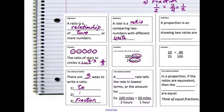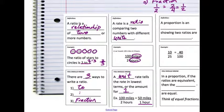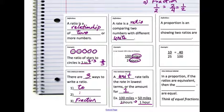A unit rate tells the rate in lowest terms, or the amount for one. When I have a unit rate, I want my denominator to be equal to one. For example, if I had 100 miles for every two hours, I would want to simplify that so it turns into a one. By simplifying my fraction, two hours turns to one hour and 100 miles turns to 50 miles. Now I have a rate of 50 miles per hour — that's a much simpler way to describe the rate than saying I go 100 miles every two hours.